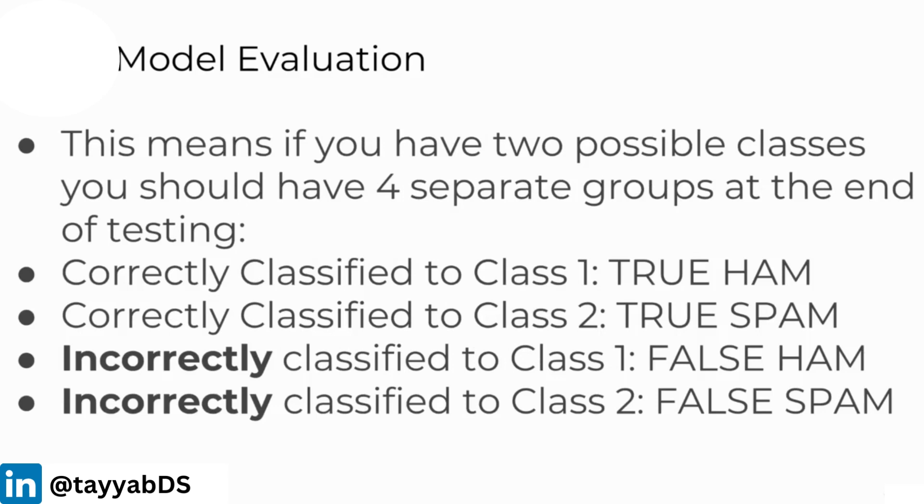This means if you have two possible classes, you should have four separate groups at the end of testing: correctly classified to class one (TRUE HAM), correctly classified to class two (TRUE SPAM), incorrectly classified to class one (FALSE HAM), and incorrectly classified to class two (FALSE SPAM).